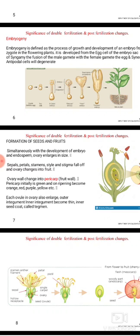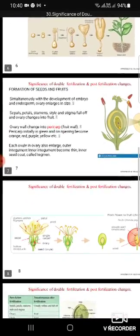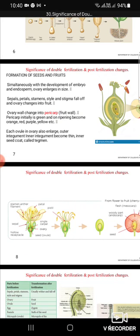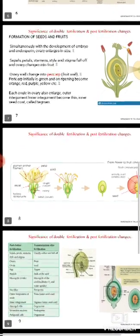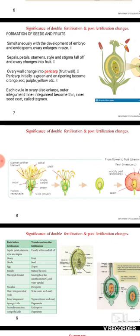Simultaneously with the development of the embryo and endosperm, the ovary enlarges. The ovary is a part of the pistil, present at the basal region; above this is the style, and at the uppermost tip is the stigmatic region. The non-essential parts of the flower — namely the sepals, petals, stamens, style, and stigma — fall off, and the ovary changes into the fruit. The ovary wall changes into the pericarp, that is the fruit wall. The pericarp is initially green and on ripening becomes orange, red, purple, yellow, etc.